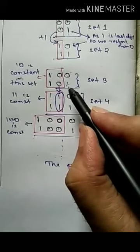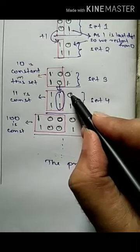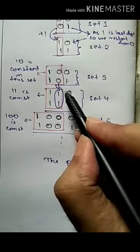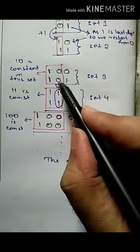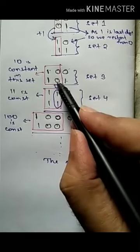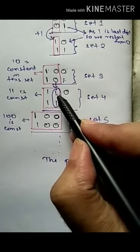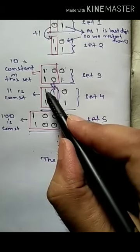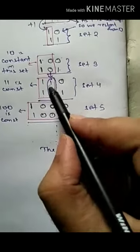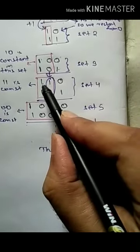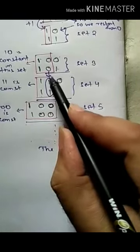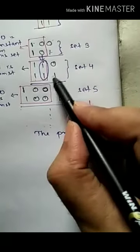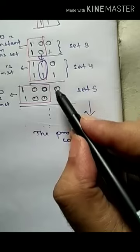After the units place reaches the last digit of binary, it restarts to 0. The tens place is 0, so it can be incremented to 1 — since 0 plus 1 is 1, which is valid in binary. The hundreds place remains constant, so it becomes 110. In this set, 1-1 remains constant and only the units place changes. Since there are only two numbers in binary, this set completes quickly.